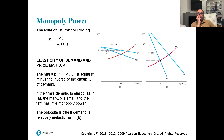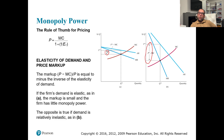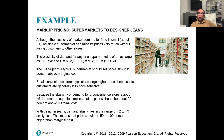If the firm's demand is elastic, as in figure one, the markup is small and the firm has little monopoly power. On the other hand, if demand is relatively inelastic, the monopoly power allows charging a high price with a large markup. Therefore, elasticity of demand is a key determinant of monopoly power.